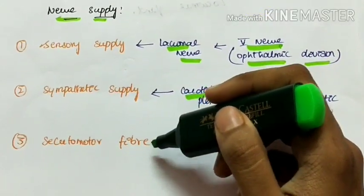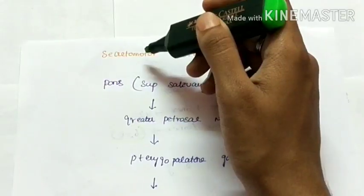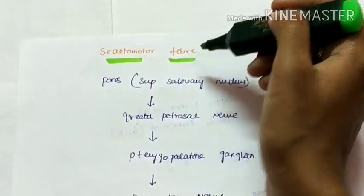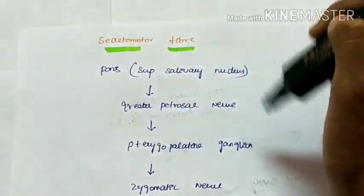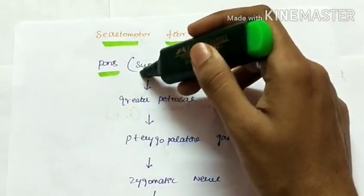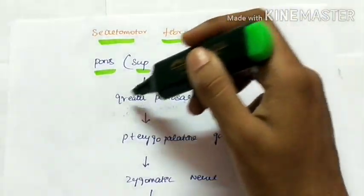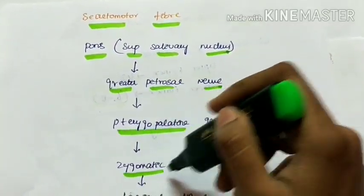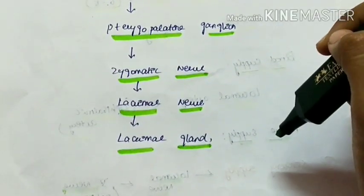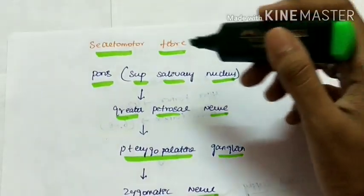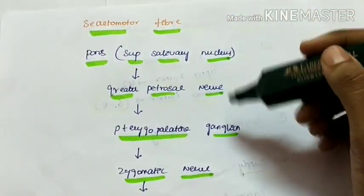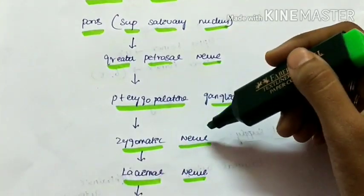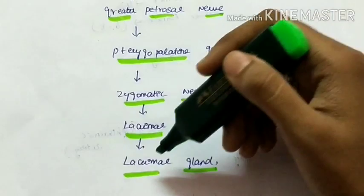There are also secretomotor fibers to the lacrimal gland. The secretomotor pathway is as follows: in the pons, there is the superior salivatory nucleus from which the greater petrosal nerve arises. It then goes to the pterygopalatine ganglion, later joins as the zygomatic nerve, and then forms the lacrimal nerve, which finally supplies the lacrimal gland.